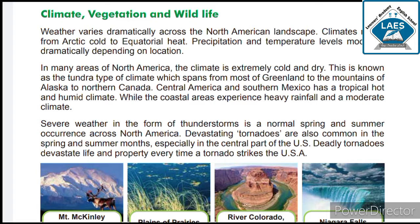The coastal area experiences heavy rainfall and moderate climate. Severe weather in the form of thunderstorms is a normal spring and summer occurrence across North America. Devastating tornadoes are also common in spring and summer months, especially in the central part of the USA.